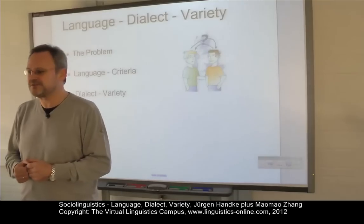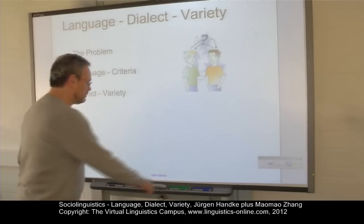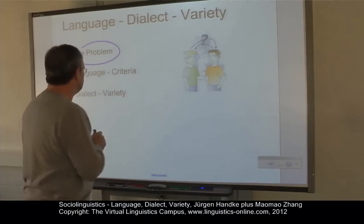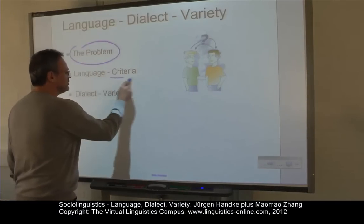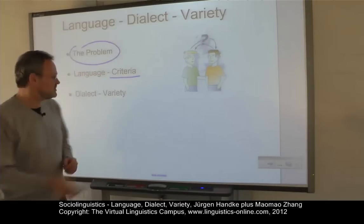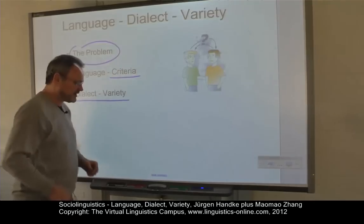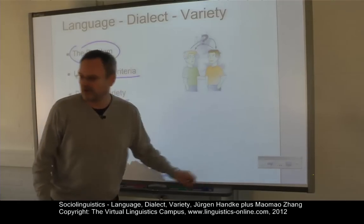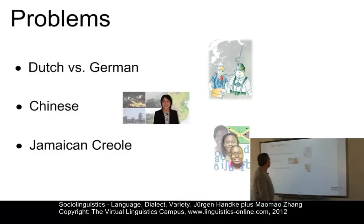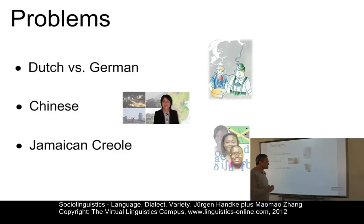Probably not. And this defines our program. We will first look at some problem cases. Knowing about these problems, we will then look at criteria to define what a language really is. And eventually, we will look at dialects or varieties and define them more precisely. Here we have three problem cases: the first concerns the relationship between Dutch and German, then we will look at Chinese, and eventually at Jamaican Creole.